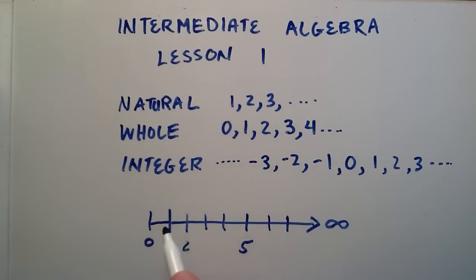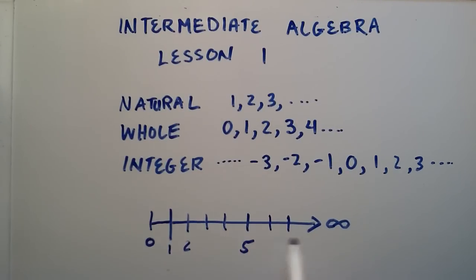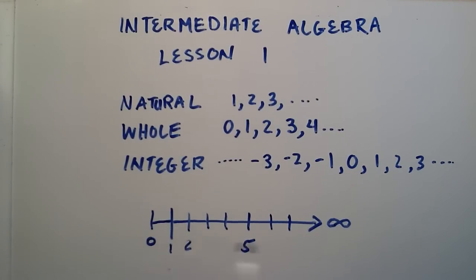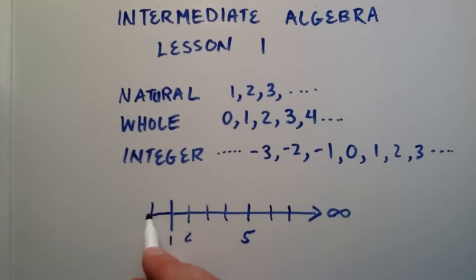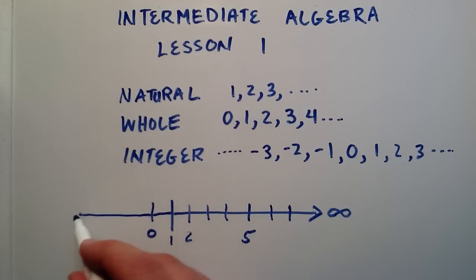And to create a number line for integers, we can simply use this same number line we already have for the whole numbers, and then just extend it off to the left. And we'll just draw a little arrow here and a minus infinity.